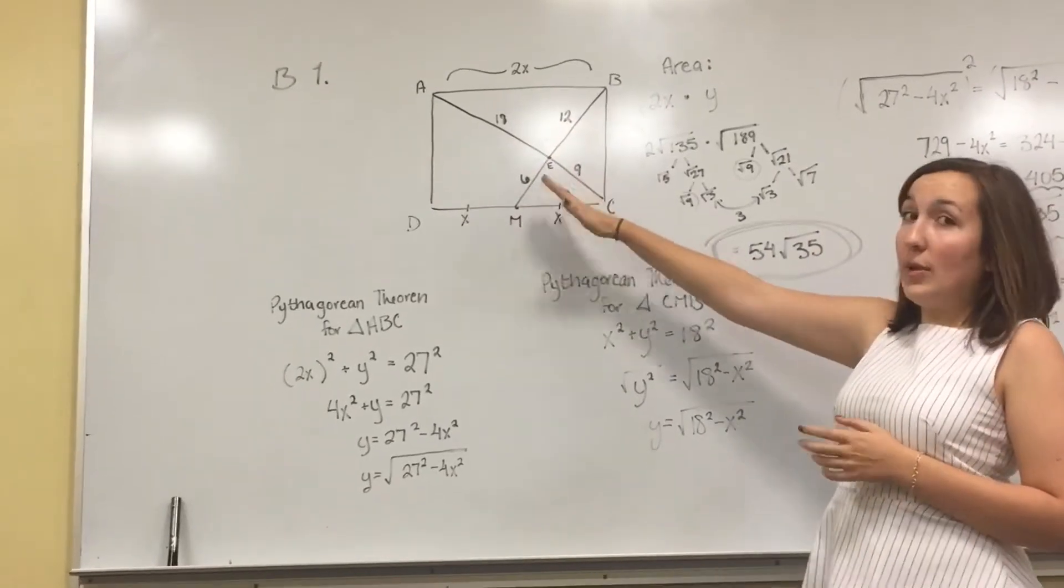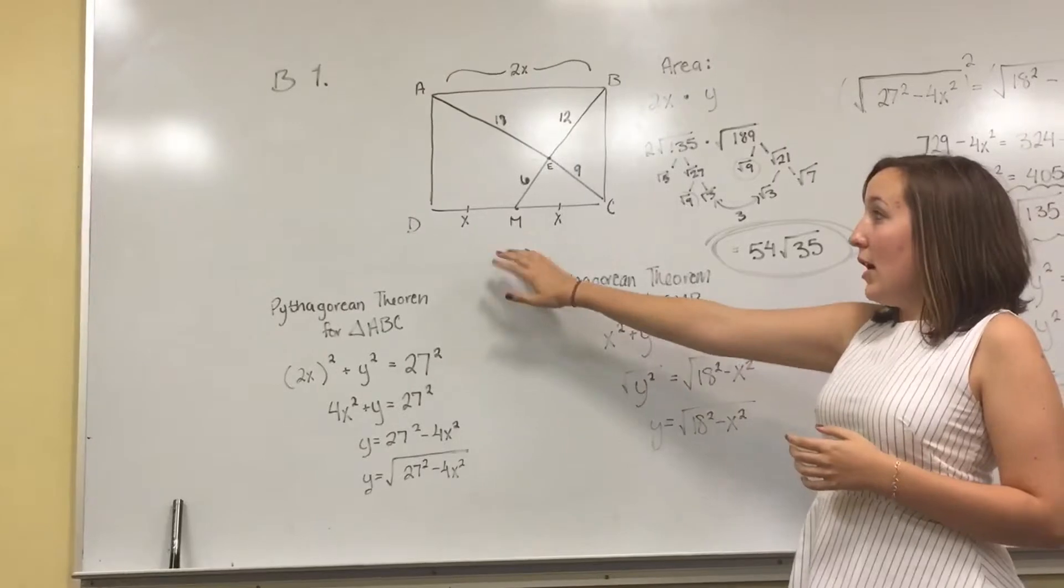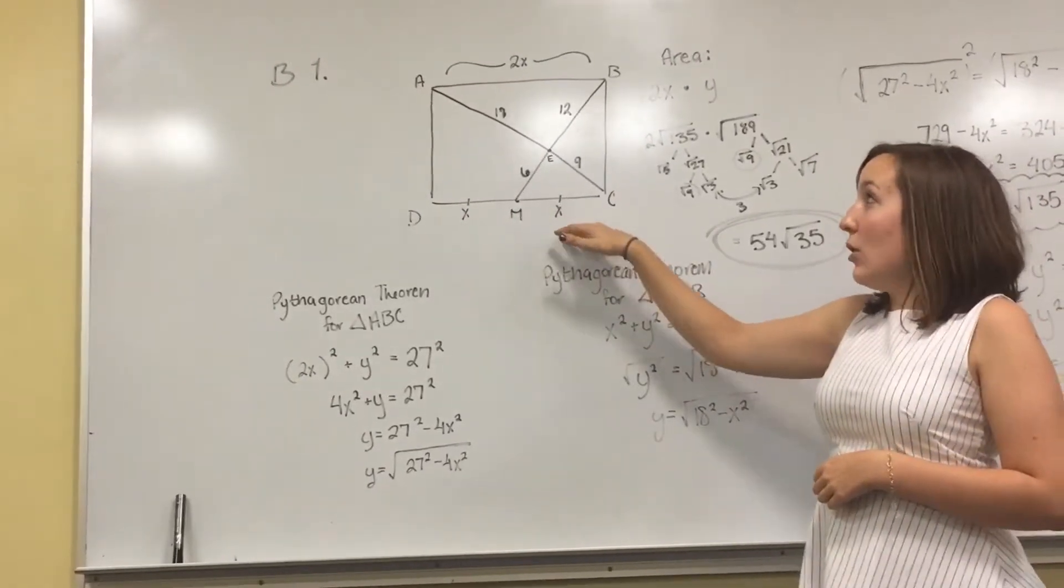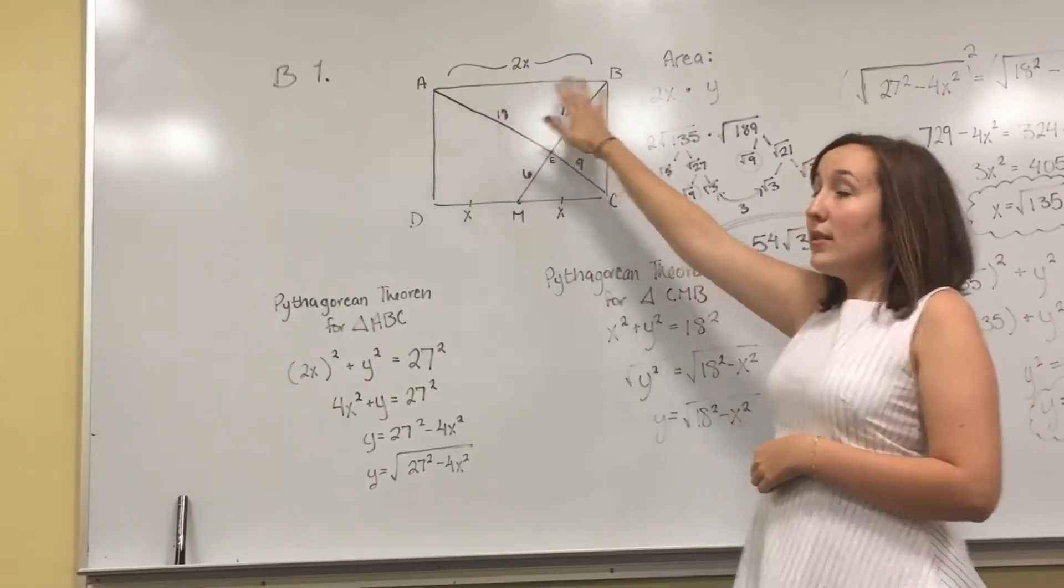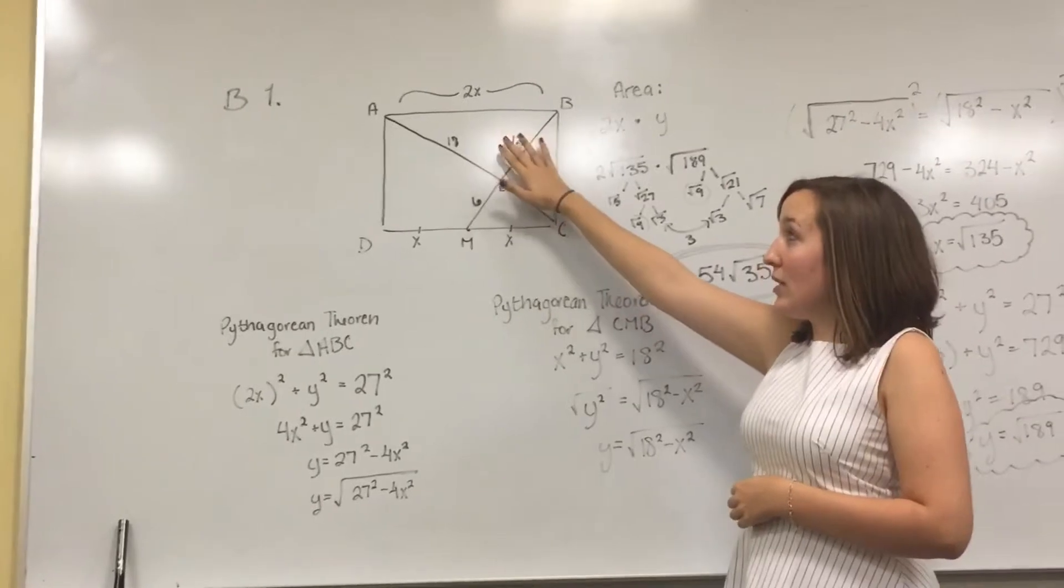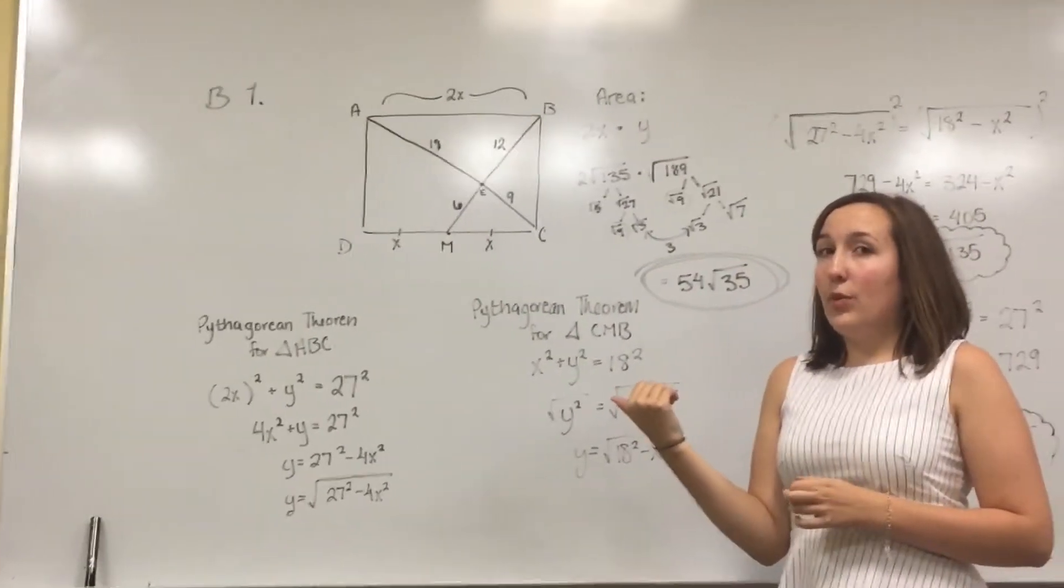And you can sort of tell that because this is the midpoint of D and C, that both the sides of this I just labeled x, and then the whole side up here is going to be 2x. So we can sort of tell that this triangle here is going to be twice as big as this one here.